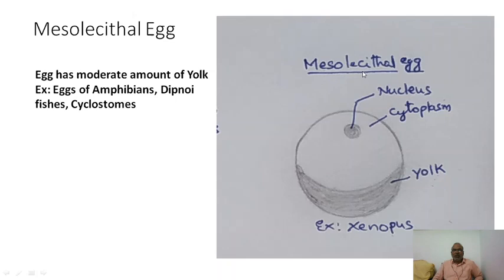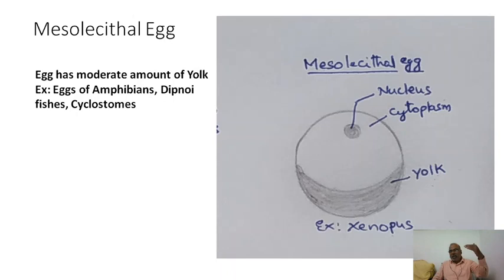Mesolecithal eggs contain a moderate amount of yolk — 'meso' meaning moderate. Example: the African bullfrog Xenopus and other amphibians. The moderate yolk serves as reserve food for embryonic development until the tadpole larva forms. Once the tadpole forms, it can collect food on its own. Examples include dipnoi fishes, amphibians, and cyclostomes such as Petromyzon.